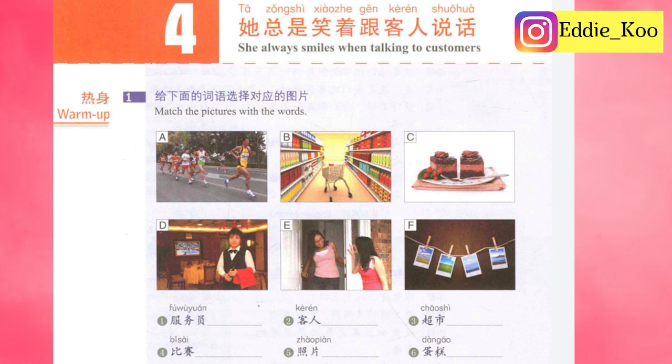Let's move on to warm up. 热身。一，给下面的词语选择对应的图片。Match the pictures with the words. I'm going to read the six words, and you have some time to match the words with the correct pictures. 一，服务员 — waiter.